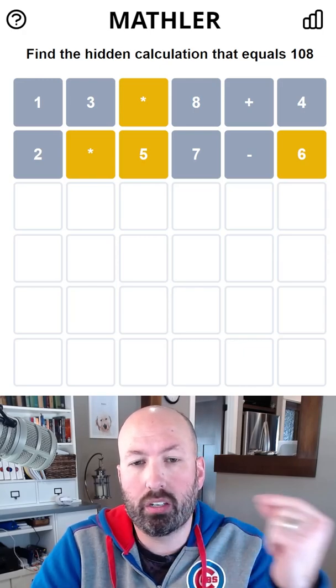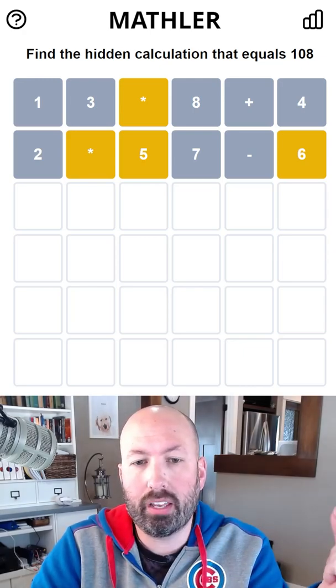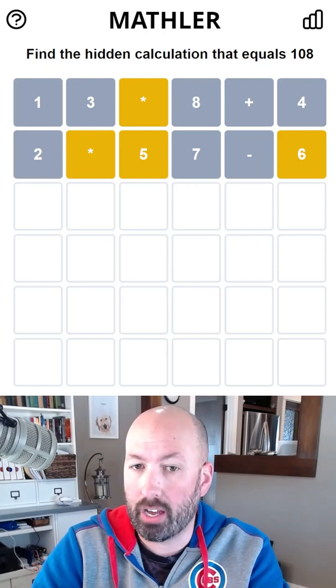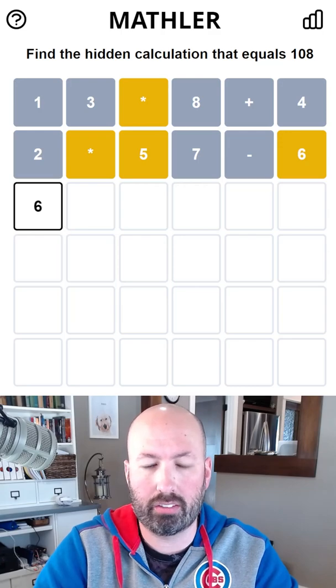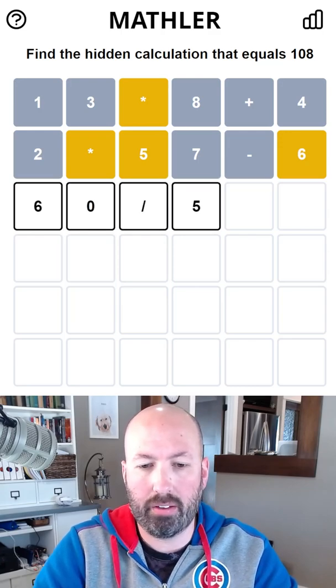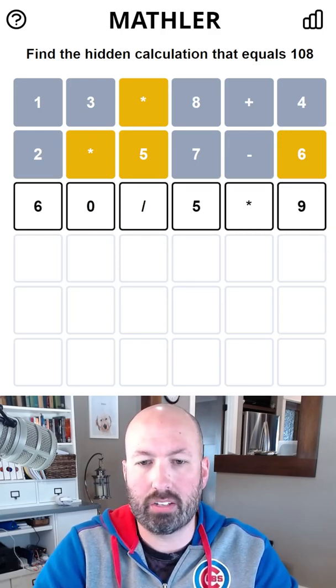So, we could do, what about like 60 divided by 5 times 9? 60 divided by 5 would give us 12, times 9 would be 108. Let's try that. 60 divided by 5 times 9.